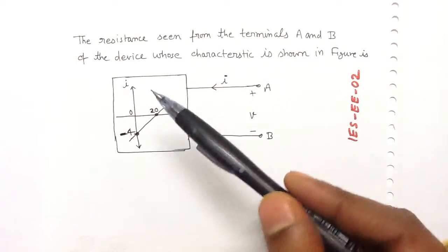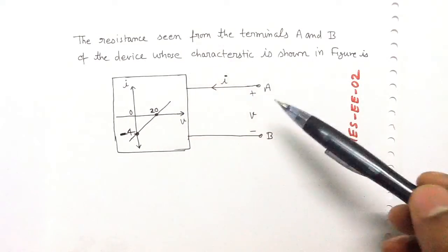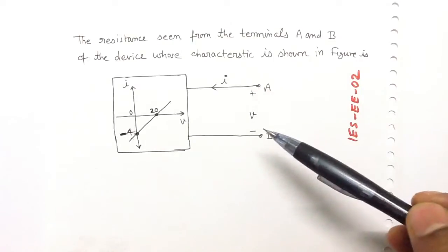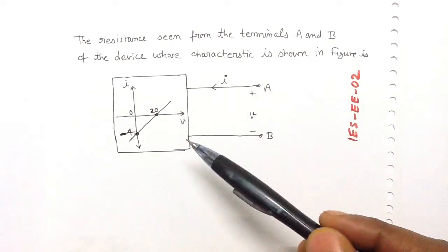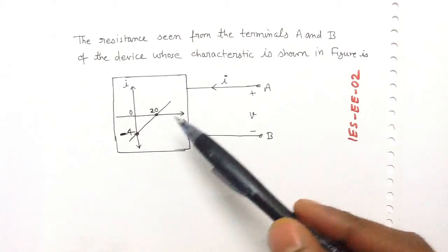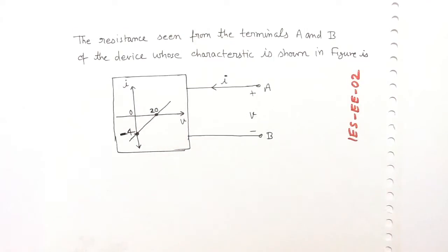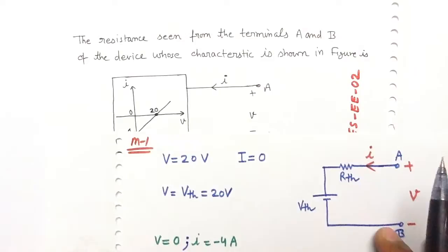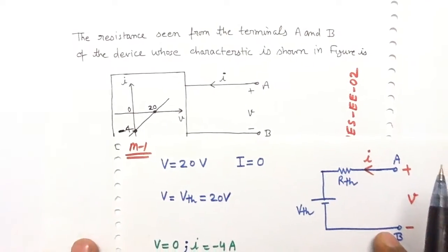In this problem, we have to calculate the resistance seen from the terminals A and B of the device whose characteristic is shown in figure. Let me discuss the first method to solve this problem.